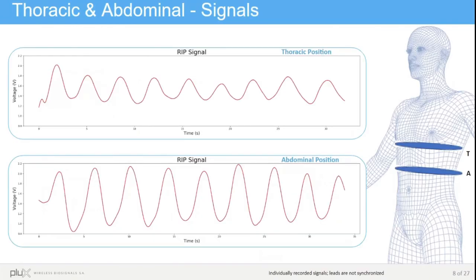Here we can see the plot of both signals for the two positions — thoracic and abdominal positioning. The upper plot is the positioning in the thoracic region. It is clearly shown that the peak-to-peak amplitude is much lower than in the lower plot of the abdominal positioning. This is because the displacement near the base of the rib cage is much larger than on the top, and therefore the variations of the cross-sectional area are more evident.